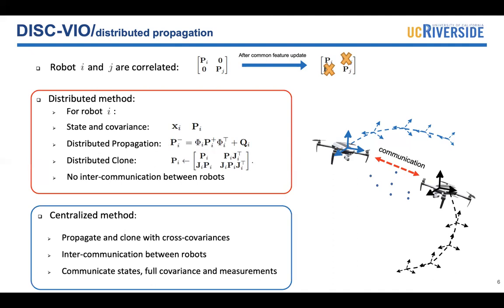On the other hand, if you use a centralized method, all the robots need to communicate with the other robots to propagate and clone the cross covariance. So obviously, DISC-VIO is more efficient in the propagation stage.